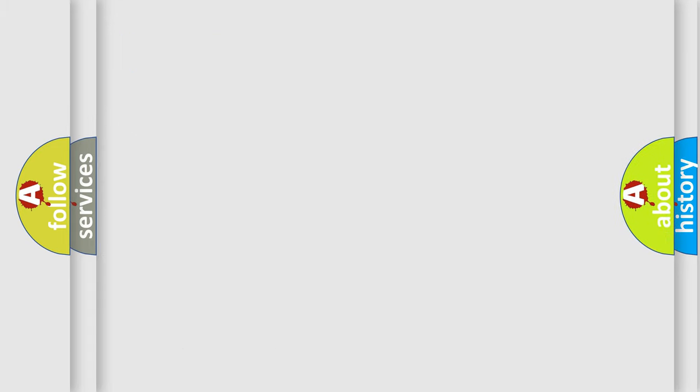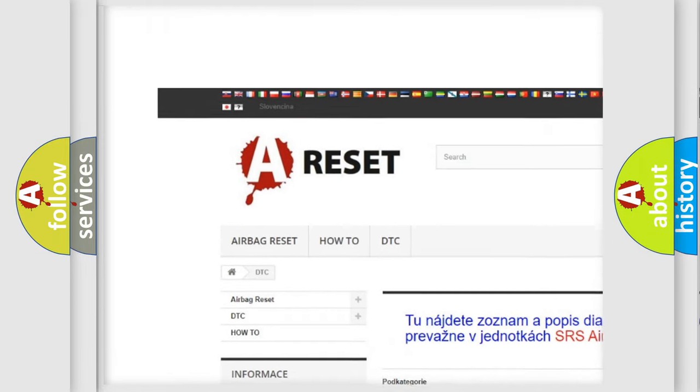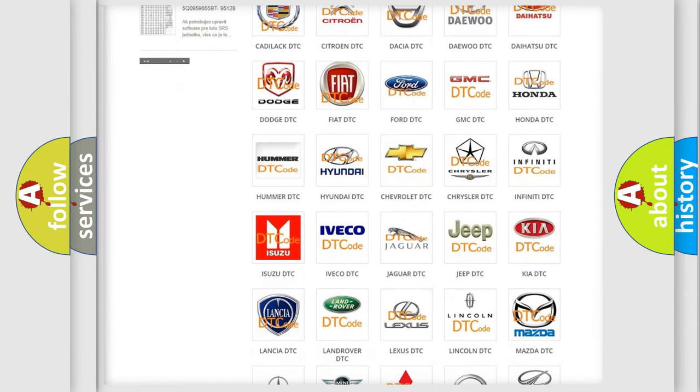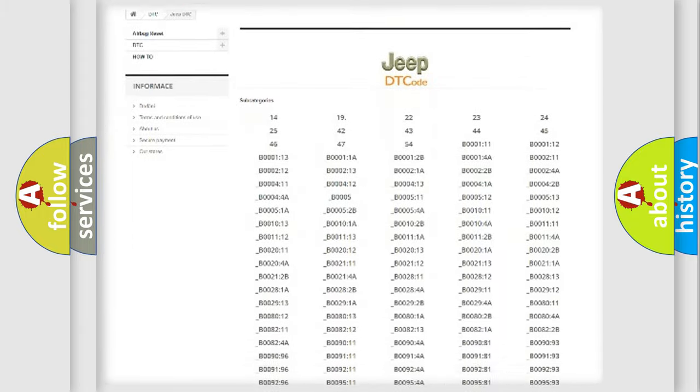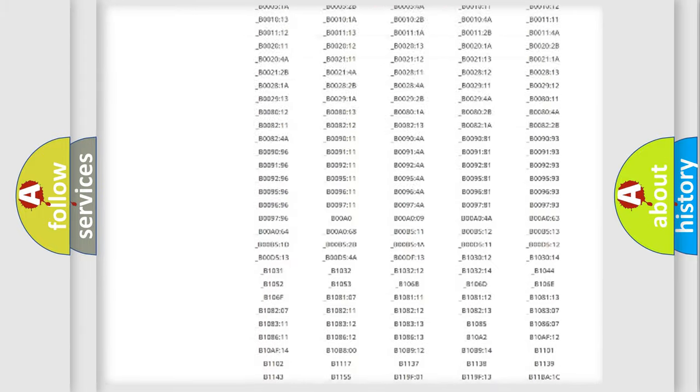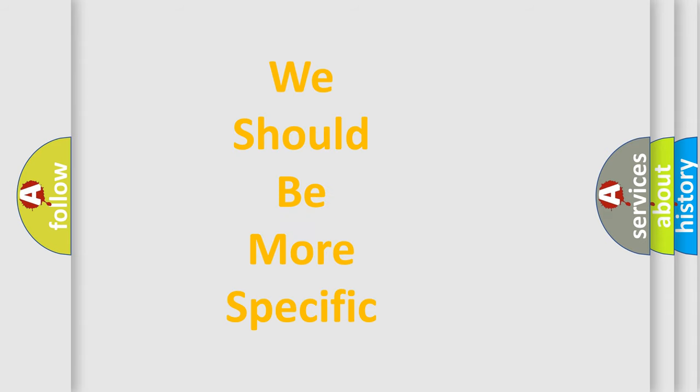Our website airbagreset.sk produces useful videos for you. You do not have to go through the OBD2 protocol anymore to know how to troubleshoot any car breakdown. You will find all the diagnostic codes that can be diagnosed in Jeep vehicles, and many other useful things. The following demonstration will help you look into the world of software for car control units.